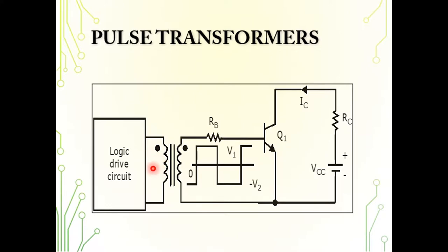A pulse transformer usually has only one primary winding but can have multiple secondary windings. Across each secondary winding, you can connect one particular device. The input is a pulse, and this pulse can drive one transistor per secondary winding. If you need to drive a second transistor, you take a second secondary winding from the pulse transformer and connect the second transistor to it. This is one way of achieving isolation between the logic circuit and the power circuit.